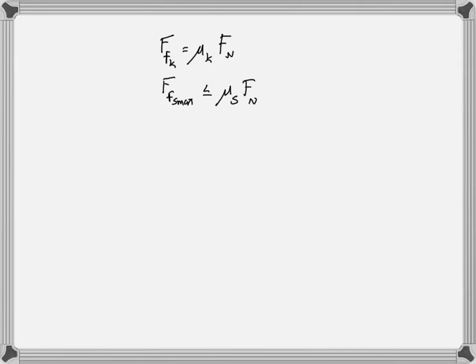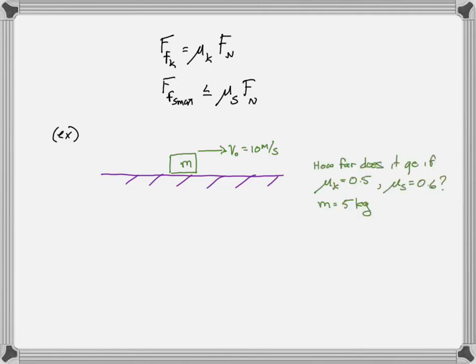So let's set up the problem. Say I've got a textbook on a table — the purple is just the table — and I give it a shove with an initial velocity of 10 meters per second. That's probably a little fast, but that's okay. How far does it go? Does it fall off the edge of the table? I'll give you the numbers: μk is 0.5, μs is 0.6, and the mass of the book is 5 kilograms — it's a heavy book.